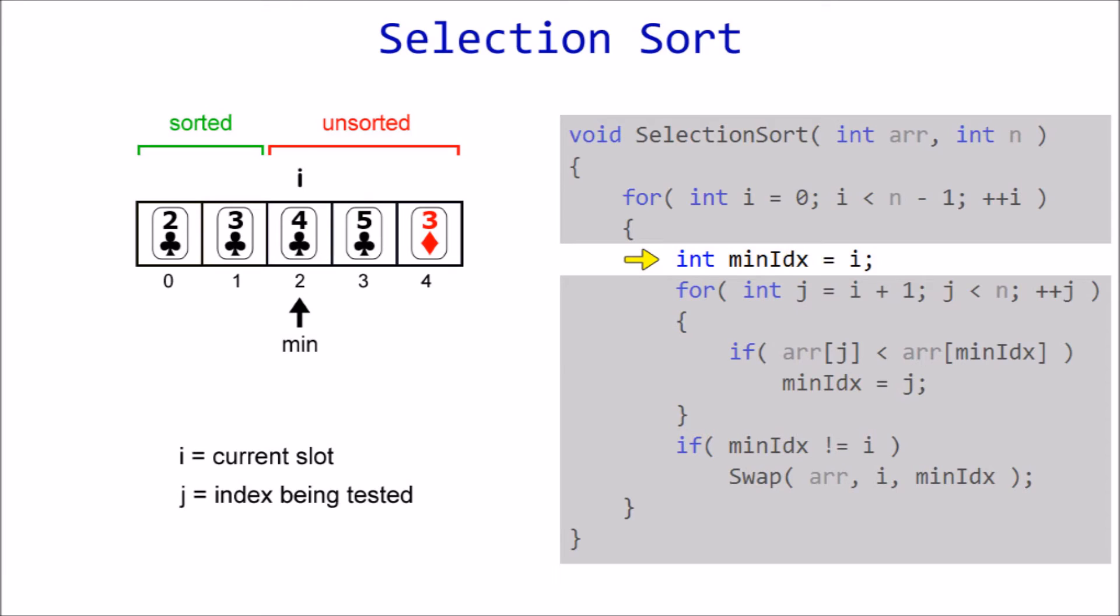Now four becomes our default minimum. Is five less than four? Nope. How about three? Yes, it is, so that's our new minimum. Swap it with four in order to place it in the current slot and now we head to our final iteration.